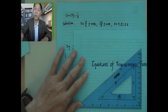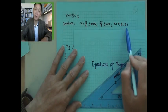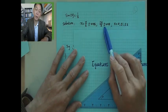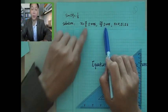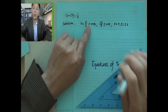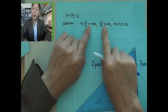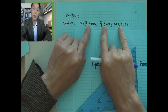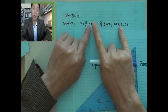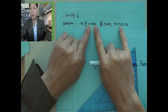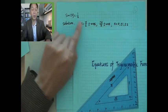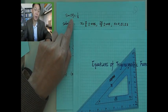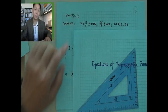Since n can be positive or negative, you don't really need to write plus or minus — you may just write plus. Because if n is a negative number, you will have a minus automatically. So this is the complete solution for sin x equals one-half.